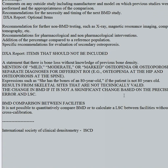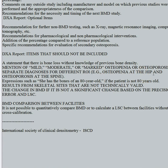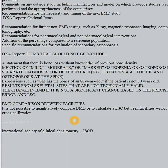Items that should NOT be included on your DEXA report: never mention mild, moderate, or marked osteopenia — it's just osteopenia or osteoporosis. Never give separate diagnoses for different regions, like osteopenia of the hip and osteoporosis of the spine. Don't include results from skeletal sites that are not technically valid — if the lumbar spine is sclerotic, just state it's invalid. Don't report a change in bone mineral density if it is not a significant change based on precision of error. Regarding comparisons between different facilities, it's not possible to quantitatively compare bone mineral densities or calculate least significant change without cross-calibration, so basically it's not possible to compare unless done on the same unit.